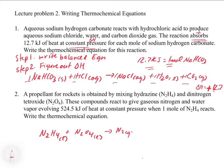Writing the equation: N₂H₄(l) + N₂O₄(l) → N₂(g) + H₂O(g). Checking balance: on the left we have N₂H₄ and N₂O₄ but only one N₂ on the right — something's not right. You should balance this on your own for practice. The correct balanced equation is: 2N₂H₄ + N₂O₄ → 3N₂ + 4H₂O.